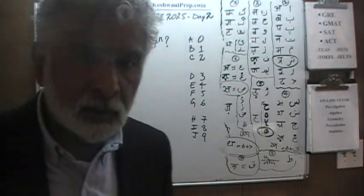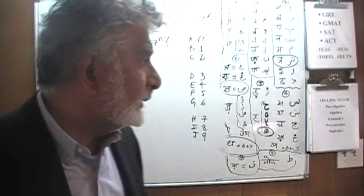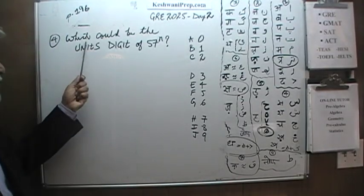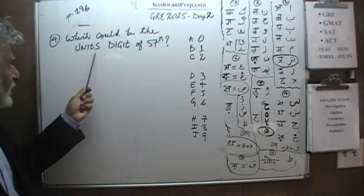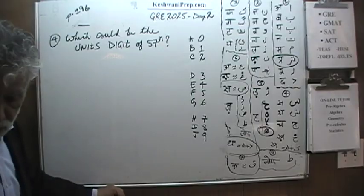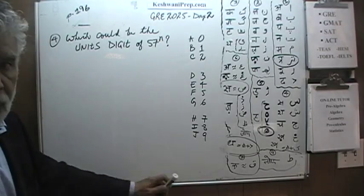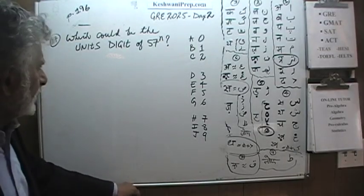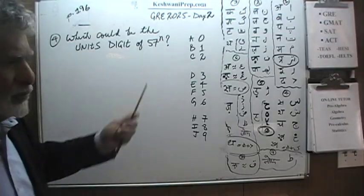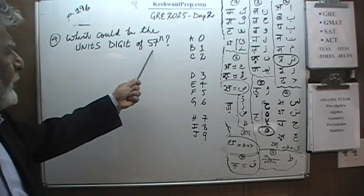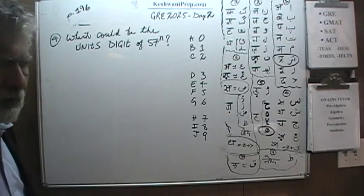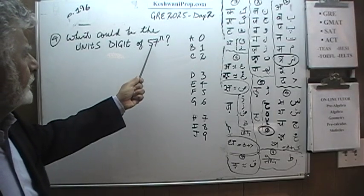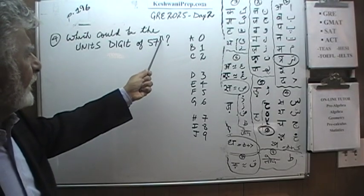Always make sure that the book is in front of you. Here is the problem — it is a very straightforward problem. It says: which of the following could be the unit digits of 57 raised to N?